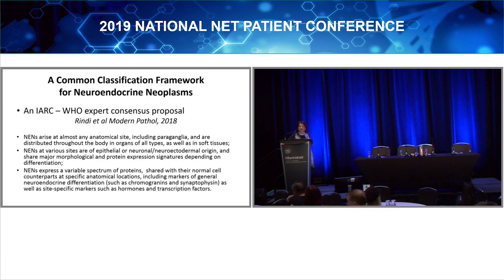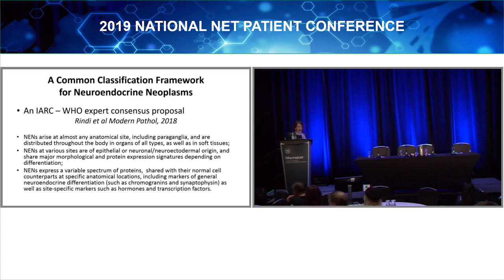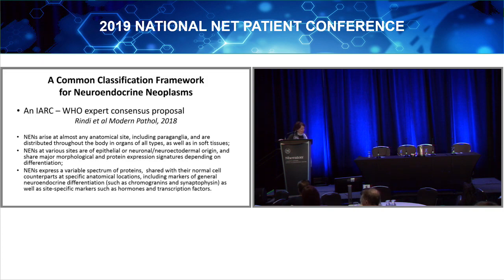In 2018, the WHO brought together experts in this disease from different parts of the world — lung pathologists, GI pathologists, pancreas pathologists, and endocrine pathologists — and we came to the agreement that these neuroendocrine tumors should be called neoplasms as an overarching term. Neoplasia means unrestricted growth. We agreed that these tumors can arise at almost any site of the body, that there are two families — the epithelial ones and the paraneuronal ones — and that they all express similar proteins.